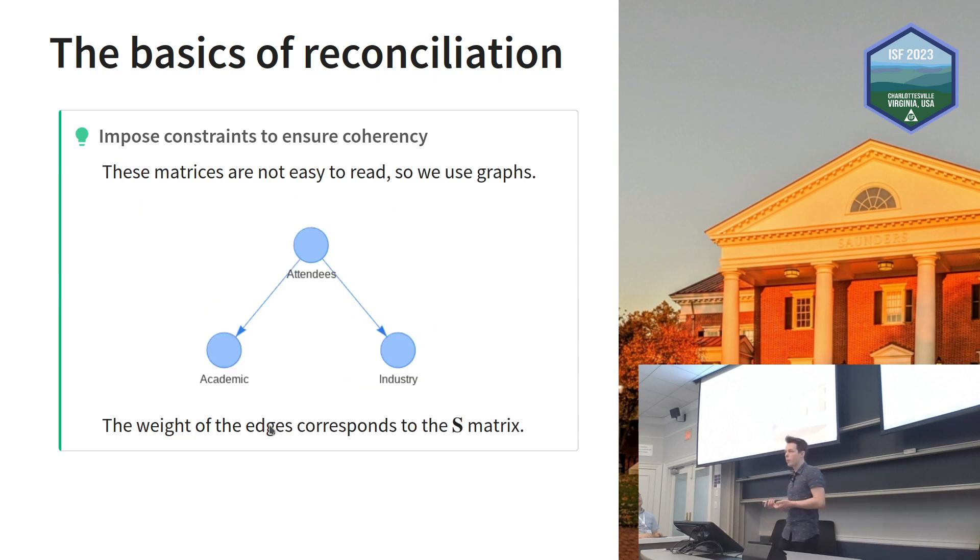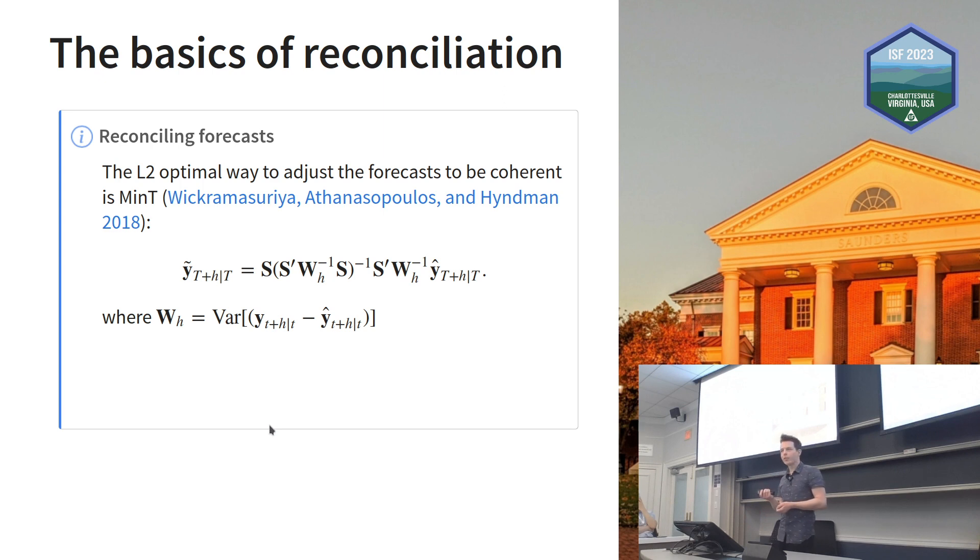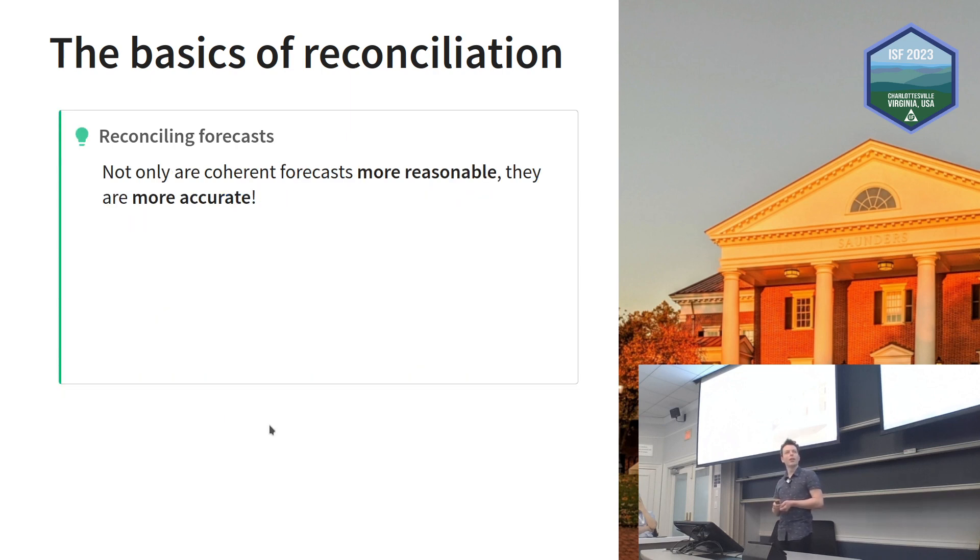This is set up in this paper here. But it's not quite easy to read these matrices, especially when you've got large hierarchies, so we use graphs to represent them. If you learn about this in textbooks, you'll see it represented with graphs. The edges of this graph, in this case just zero and one, correspond to the summation or structural matrix. You can have edges that are not equal to one, negative edges, positive edges, perhaps even nonlinear edges. If you wanted to reconcile this, you can use various methods like MinT. The great value of producing reconciled forecasts is that you get a more reasonable coherent result and an accuracy improvement as well. You can leverage information across an entire hierarchy.